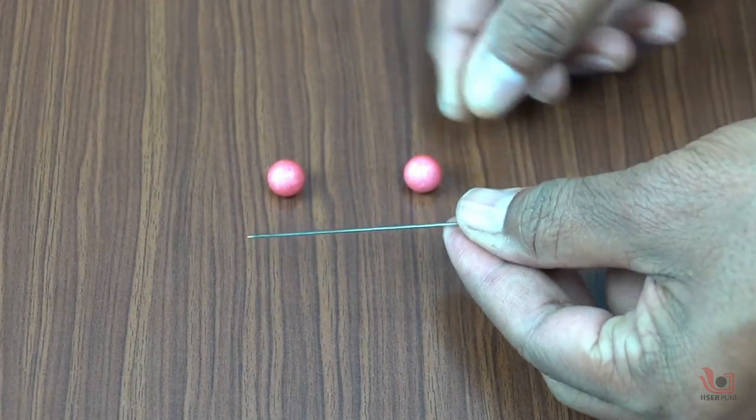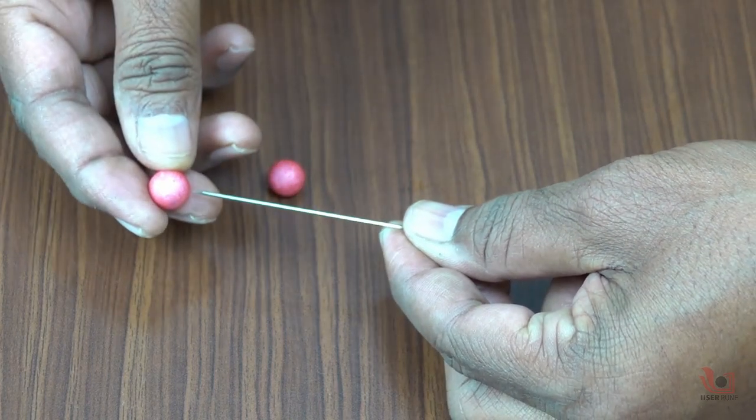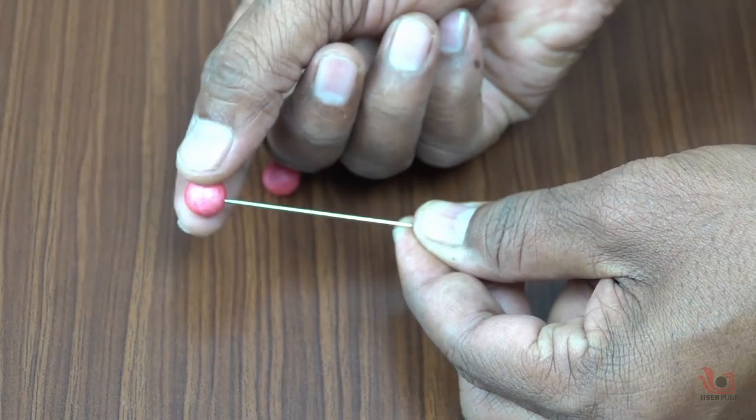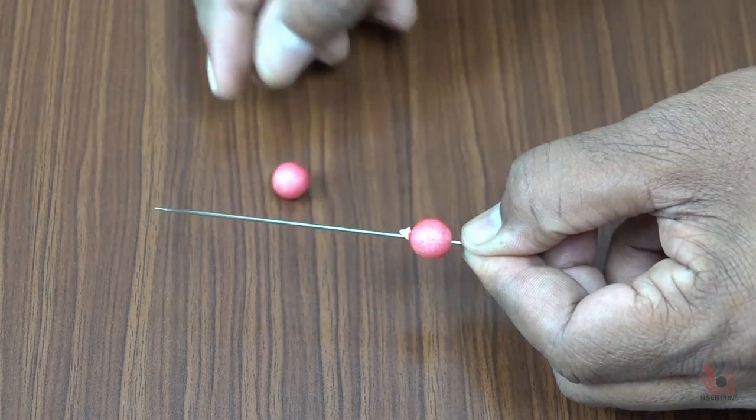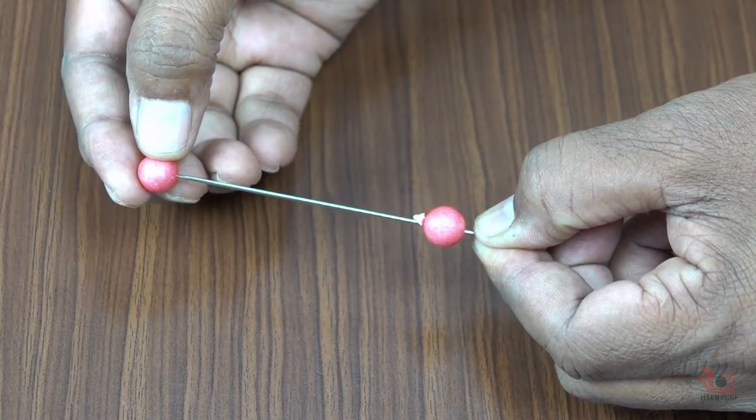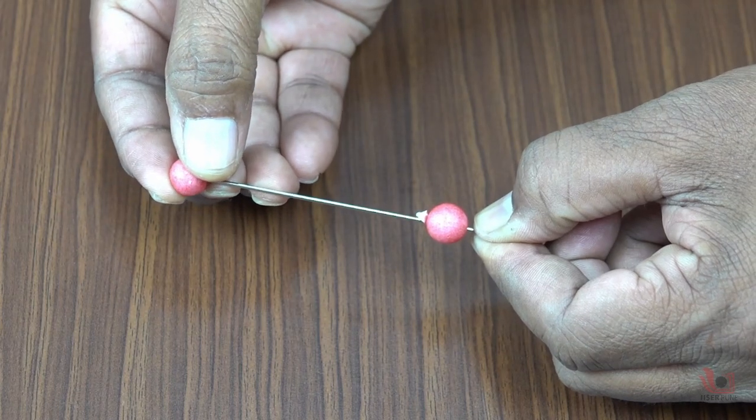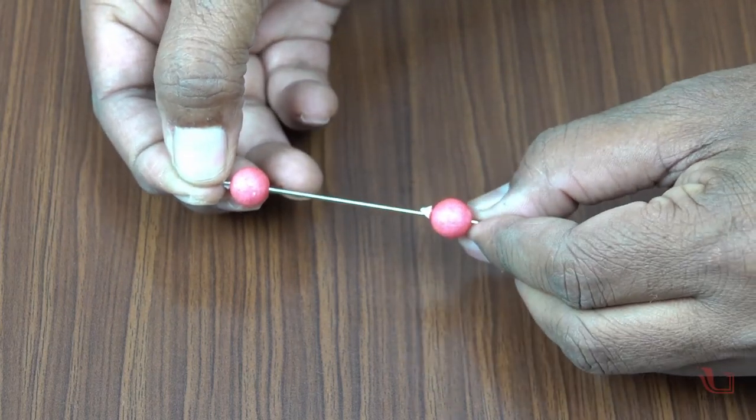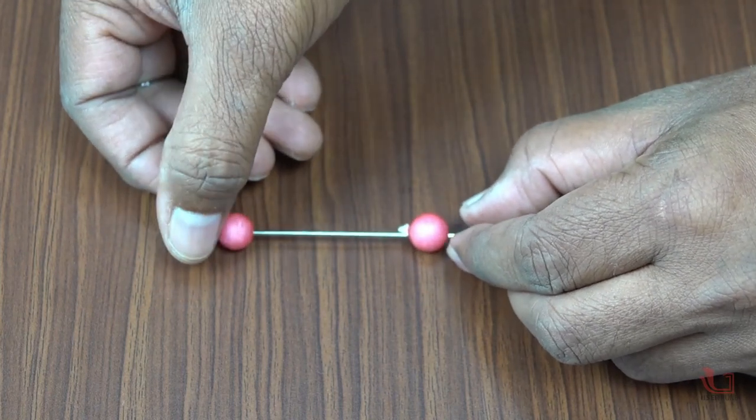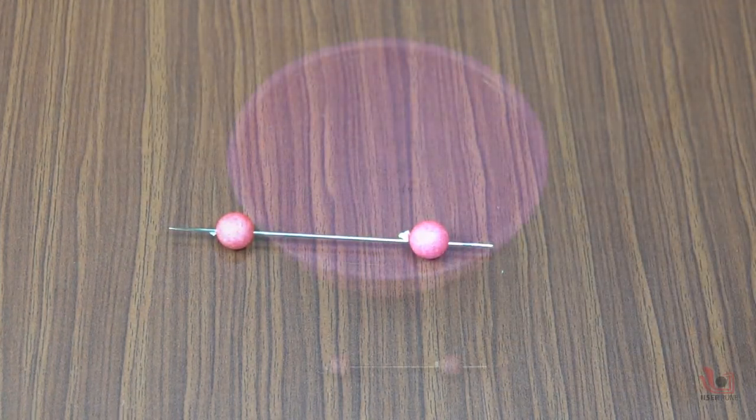After converting the regular needle into a magnet, take two styrofoam balls and insert the needle into them, so that the needle can easily float on the surface of the water. Here we are using the styrofoam balls as floaters. If you don't have styrofoam balls, you can use any lighter material that can float in the water.